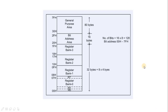The 8051 has 4 kilobytes of ROM from 0000 to 0FFF. The 8051 is organized so that data memory and program code memory can be two entirely different physical memory entities, each having the same address ranges. Program addresses higher than 0FFF will cause the 8051 to automatically fetch code bytes from external program memory.